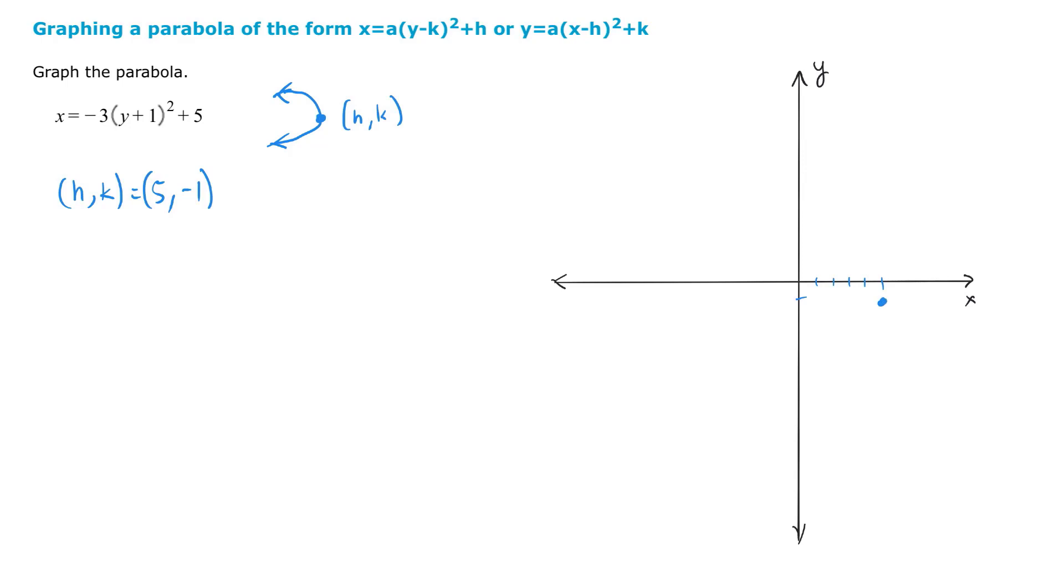And we could need at least three ordered pairs. We do have an axis of symmetry. The axis of symmetry is this dotted line right there. In fact, why don't we label that? The axis of symmetry is y equals negative 1.